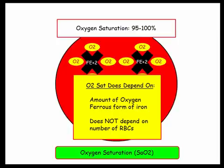As oxygen binds iron in the ferrous form, Fe plus 2, the O2 saturation will be impacted by the presence of oxidized ferric, which is iron in the Fe plus 3 form. O2 saturation, however, does not depend on the number of RBCs.